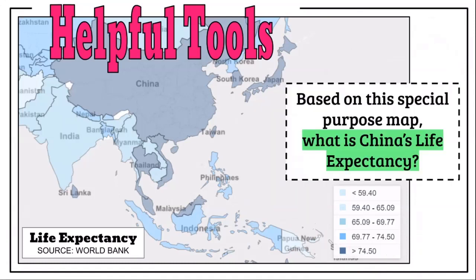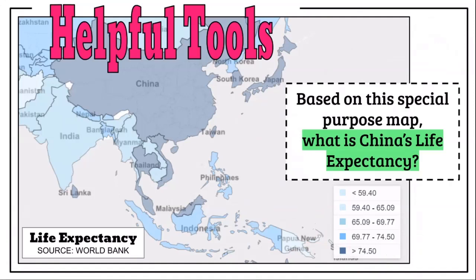Based on this special purpose map, what's China's life expectancy? You take the color and trace it to the key — it's over 74.5 or 75.5. Then you can ask more questions: China, Taiwan, Japan, South Korea — if you look at East Asia, they generally have a high life expectancy compared specifically to South Asia.